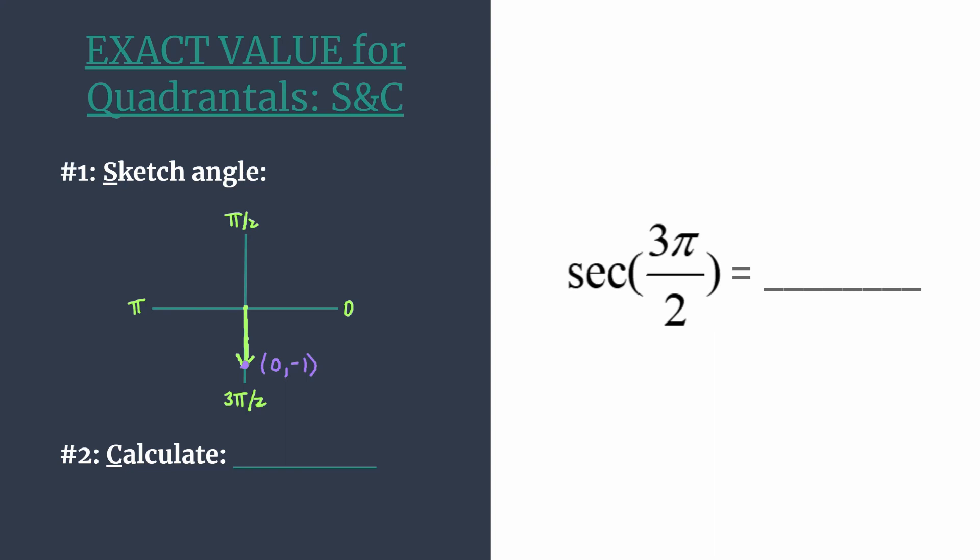Now we can calculate the secant. Remember, the secant is just the reciprocal of cosine, and on the unit circle, the cosine is the x-coordinate. So the secant ratio must be 1/x.